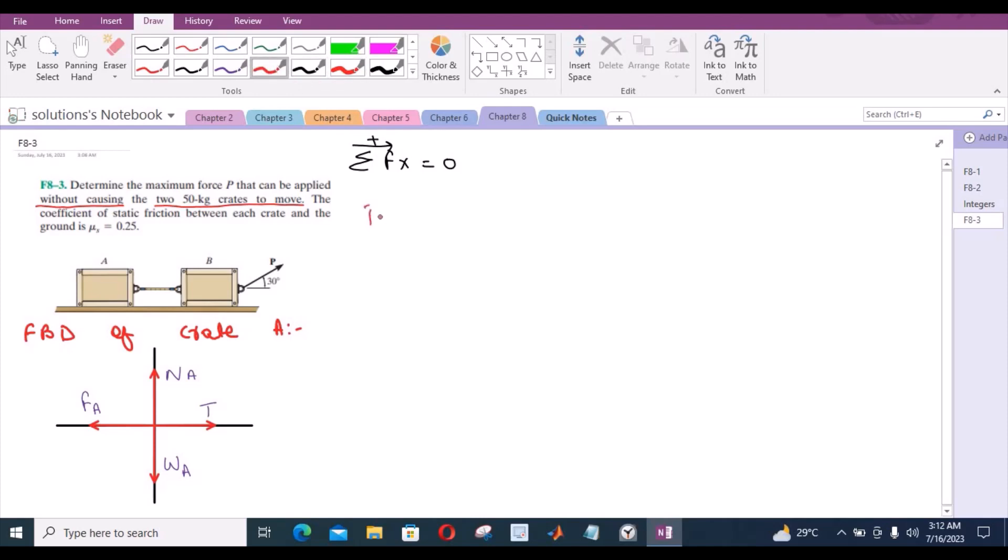So we have T minus FA equals to 0. But we know that FA could be written as mu_s NA. And mu_s for both crates in this case is 0.25. So FA becomes 0.25 NA. So if I substitute it into this equation, then this equation becomes T minus 0.25 NA equals to 0. Let's call this equation 1.